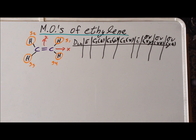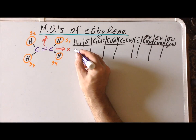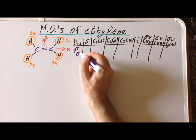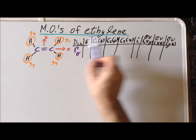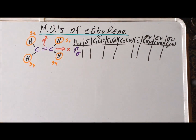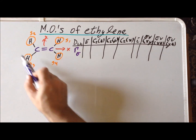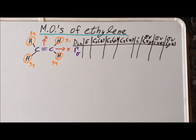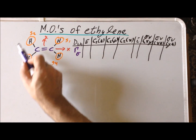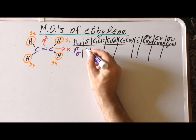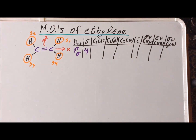Next, we want to define a reducible representation for the sigma bonding. Recall that the character under each of the classes in the point group D2h — because the point group for ethylene is D2h — we want to write down the number of group orbitals that don't move under the operation. So under the identity, all four of the orbitals stay where they started, so our character there is four.